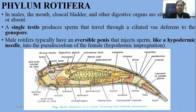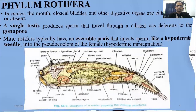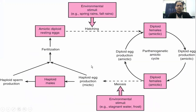In the female, hypodermic insemination — or sperm transfer — is associated with hypodermic impregnation, leading to further development. Looking at their life cycles, there are two types: amictic and mictic, which depend on environmental stimuli.